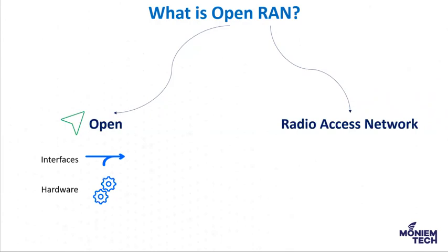The second aspect is open hardware, which can mean off-the-shelf servers or purpose-built hardware with interoperable subsystems and open specs. The third aspect is open software, which means the functions of the RAN are enabled as software, making them more accessible to network operators. Open RAN software may use open source code or closed source code.